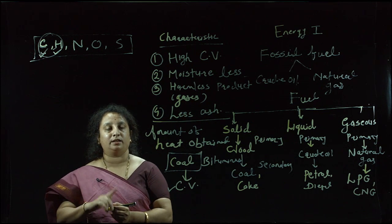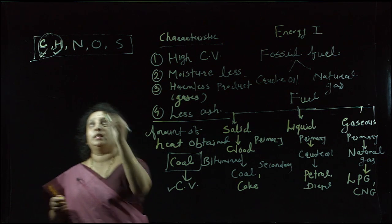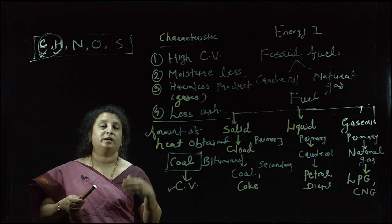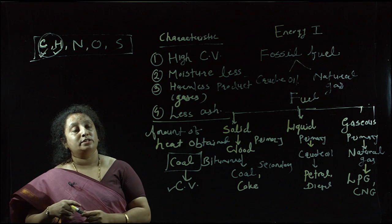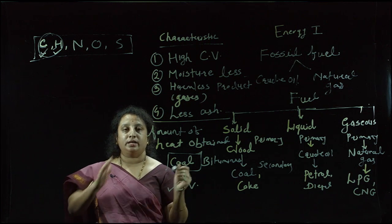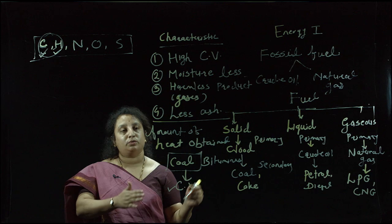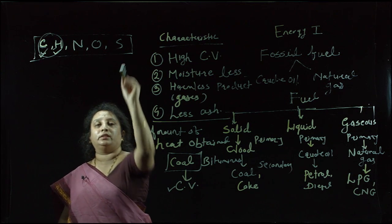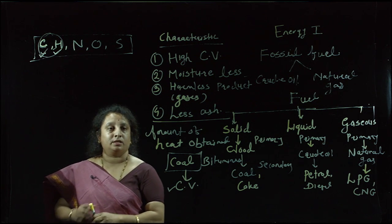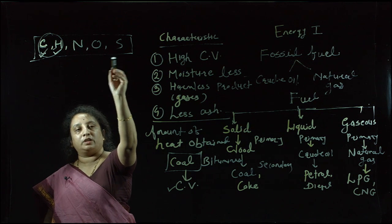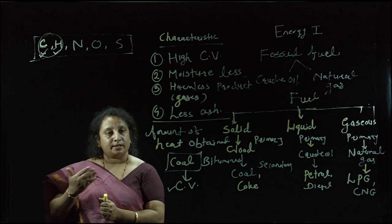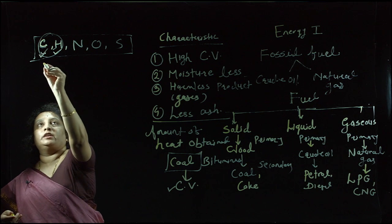There are two types of analysis: ultimate analysis and proximate analysis. Ultimate analysis determines the proportion of C, H, N, O, and S in the fuel sample to identify the quality of that fuel. The greater the proportion of carbon and hydrogen, the better the quality. This analysis is done before supplying a coal or fuel sample to a factory or power station.